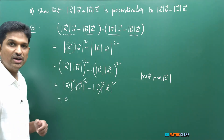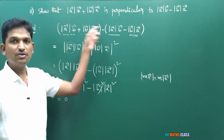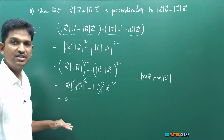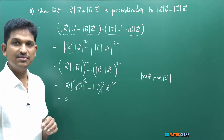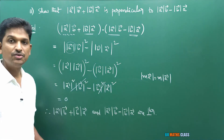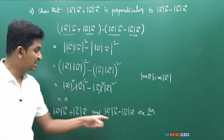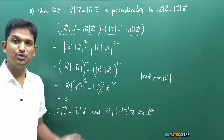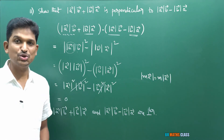Since the dot product is zero, we can conclude that the given vectors are perpendicular to each other.